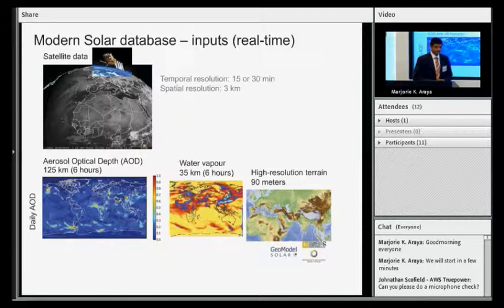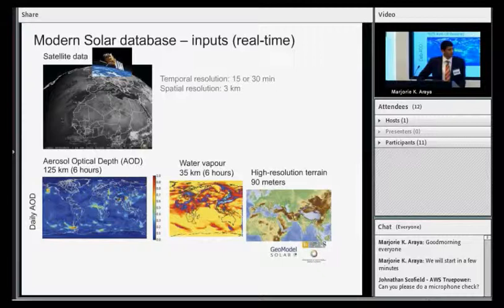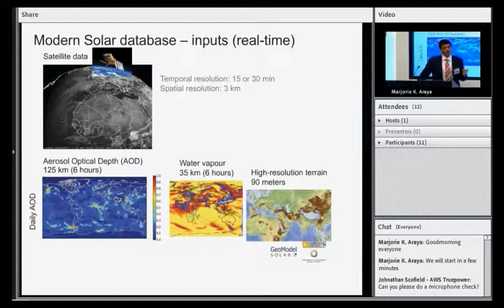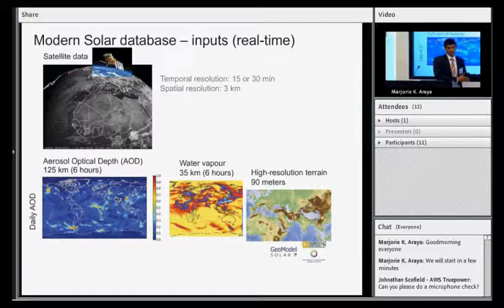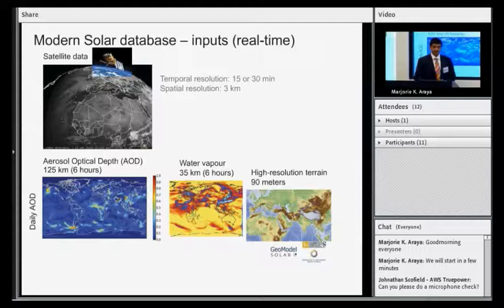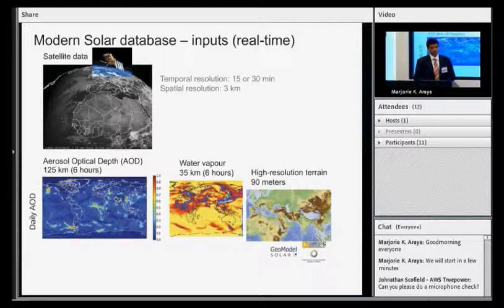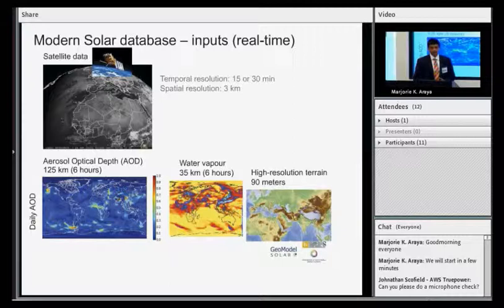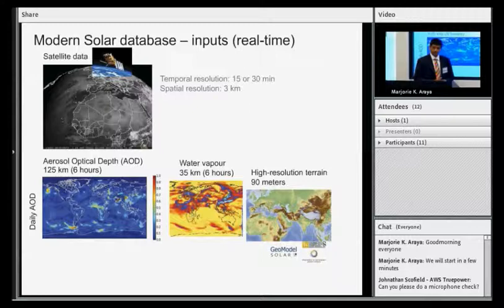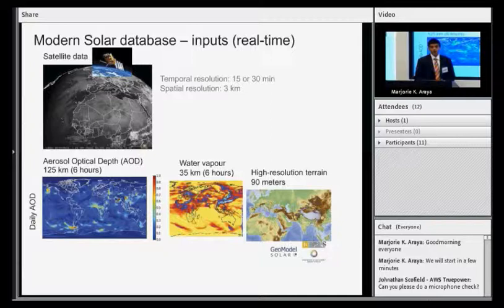The good news is that with modern modeling technologies and data inputs, it's already possible today to map at a very high resolution the solar resource across the world. What constitutes a modern satellite-based database? The inputs that we should be looking at is high-resolution spatial data at something around 3 to 4 kilometers at least, data that is updated live and not based on static data which was measured 5 or 10 years ago. And something we've spoken a lot about today in the earlier session is information on aerosol optical depth, or in simple words, the amount of pollution or dust that is there in the atmosphere.